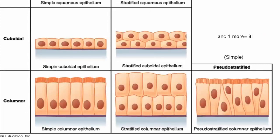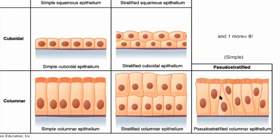So those are your six types: squamous, cuboidal, or columnar, each either simple or stratified. There's a seventh type called pseudostratified, which is actually a simple layer but looks stratified because not all the nuclei are lined up at the same level. All cells are still attached to the basal lamina, but under a microscope it appears more layered. We'll talk more about pseudostratified, and then the eighth type in a couple of minutes.